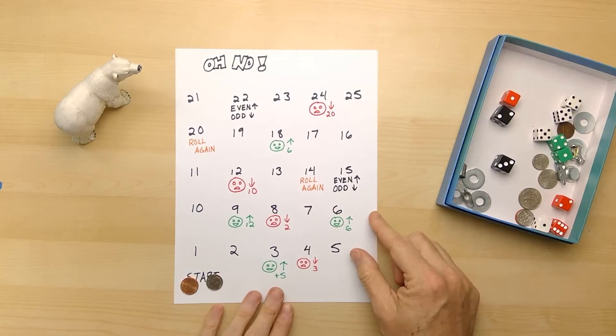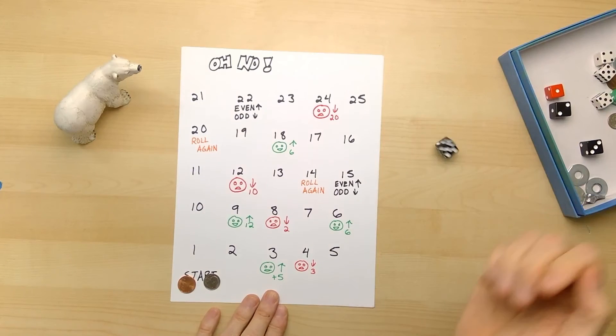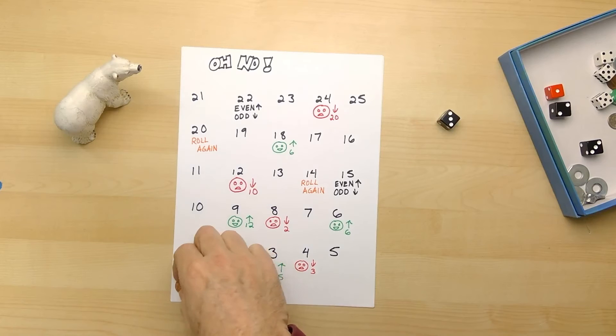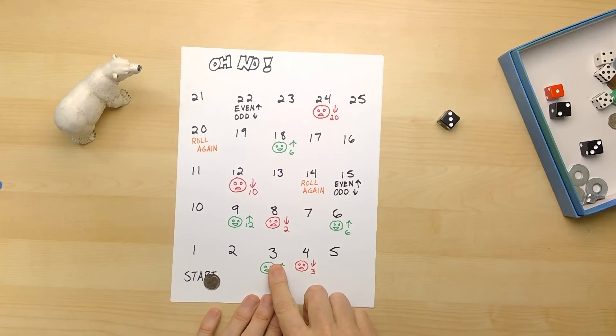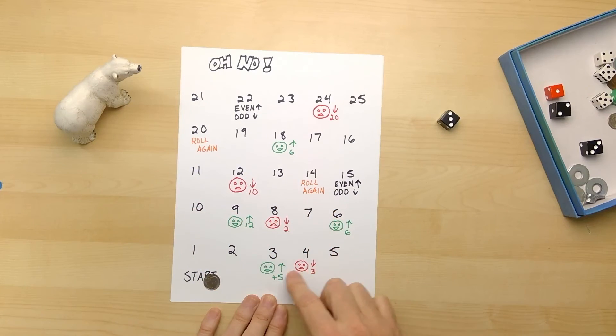All right, so copper is going to go first. And copper rolls a three - one, two, three. Go forward five - one, two, three, four, five. Go back two - one, two. Go forward six - one, two, three, four, five, six, seven, eight, nine, 10. And after all that, copper ends up on the number two.